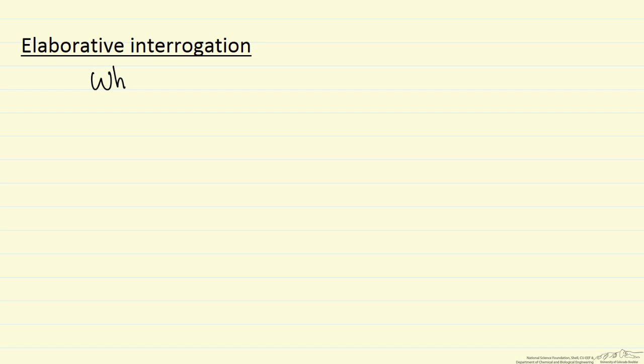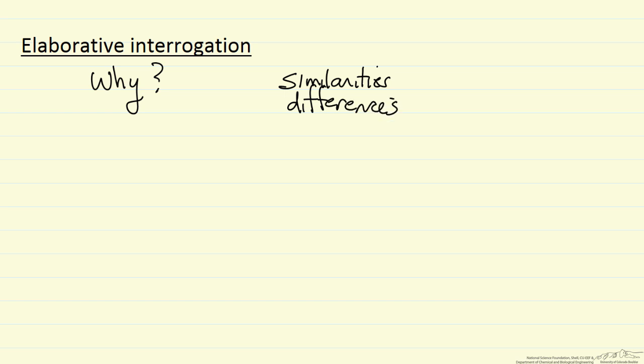So elaborative interrogation. What this means is essentially asking why. The idea when you're reading is to generate an explanation for some fact — in other words, not from the instructor, but you generating the explanation. In addition, look at similarities between this information and other related entities, and also look at differences. This approach is probably more useful for discrete factual information, but a number of studies have indicated it does improve retention.